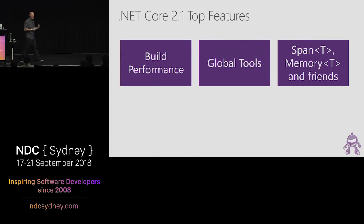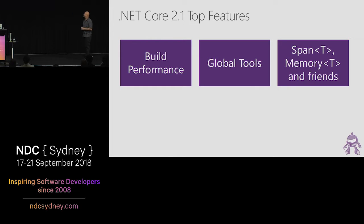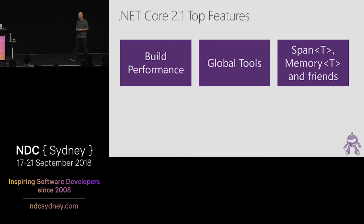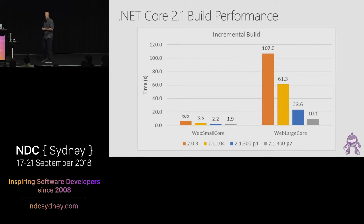First, .NET Core 2.1. There's a lot of stuff in here that really impacts ASP.NET developers — build performance, global tools, and some nuts and bolts that make your ASP.NET Core applications faster. Build performance is not a super exciting thing to say, but it really does make a difference.